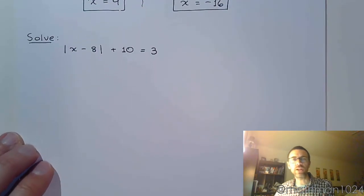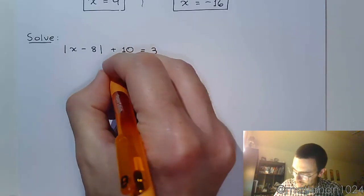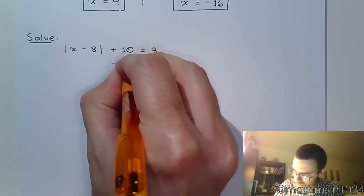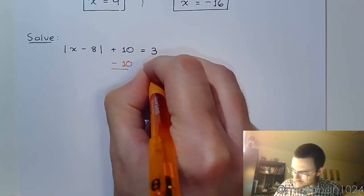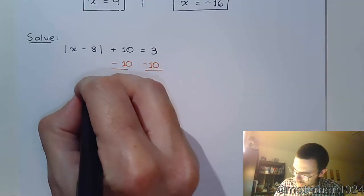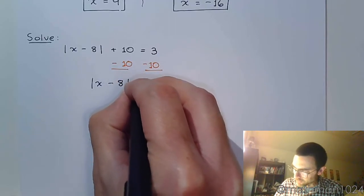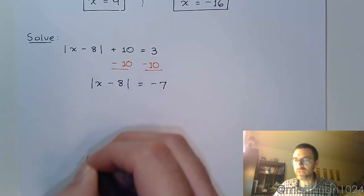Here we have the absolute value of x minus 8 plus 10 equals 3. So just like in the last example, we have to get the absolute value by itself. And so here I need to subtract 10 on both sides.